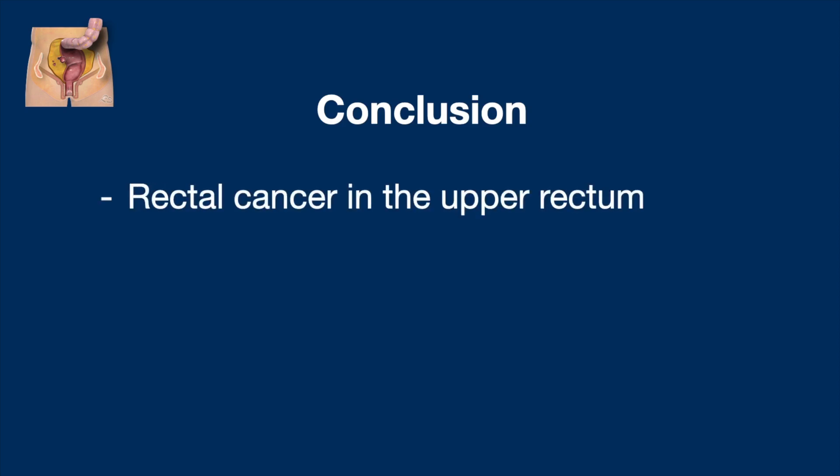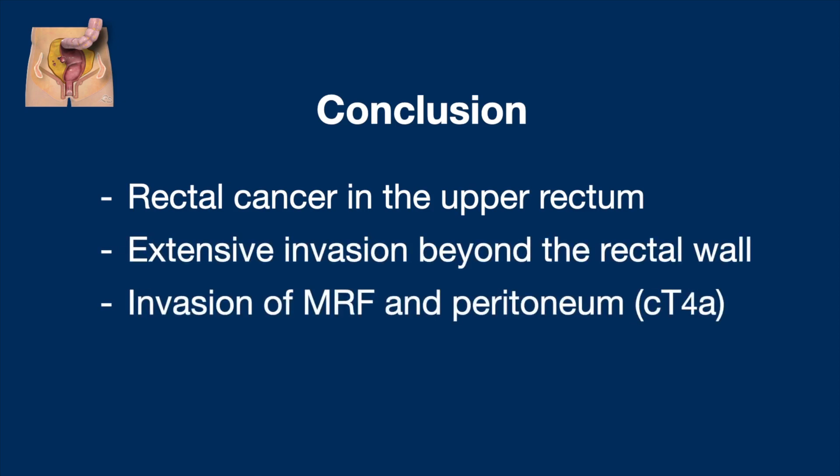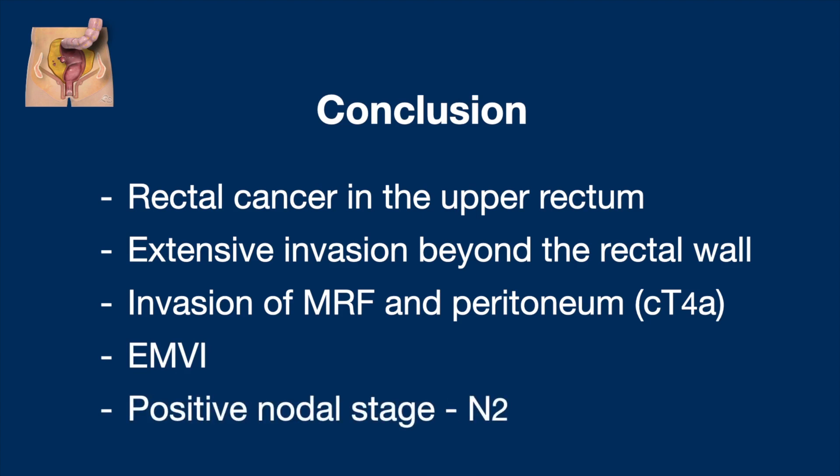So the conclusion is: we have a rectal cancer in the upper rectum with extensive invasion beyond the rectal wall, invasion of the mesorectal fascia and peritoneum indicating clinical stage T4a, extramural vascular invasion, and positive nodal stage N2.